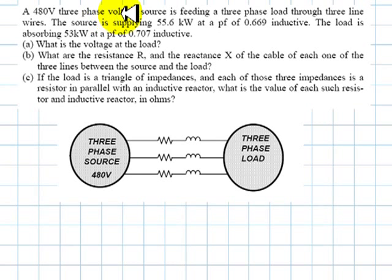A 480 volt three-phase voltage source, this one, is feeding a three-phase load through three line wires. The source is supplying 55.6 kilowatts at a power factor of 0.669 inductive. Of course, this is three-phase power. Total three-phase power at the source is 55.6 kilowatt at a power factor of 0.669 inductive or lagging, which is the same thing.